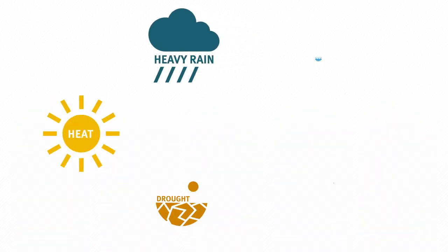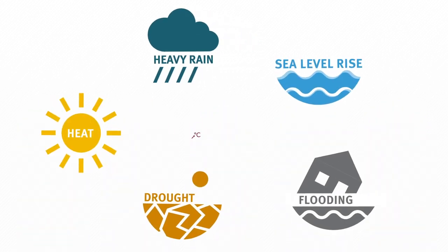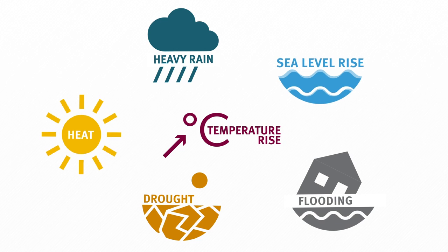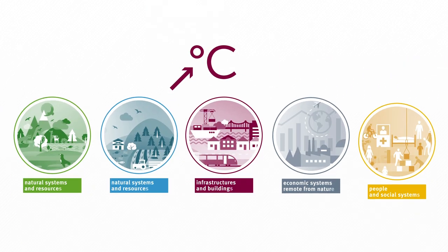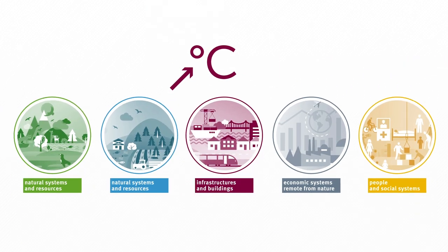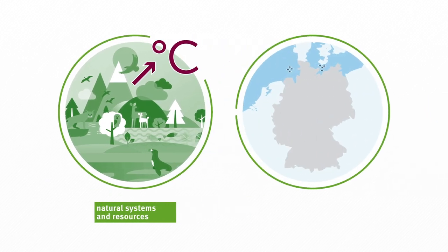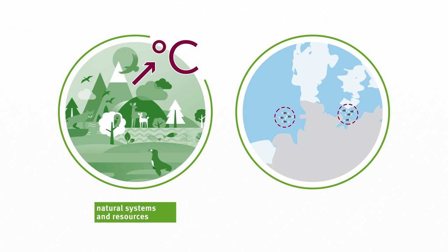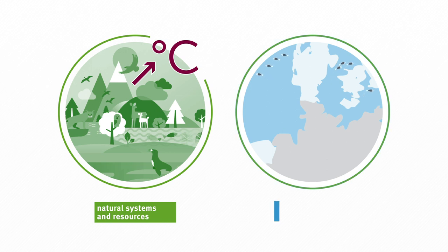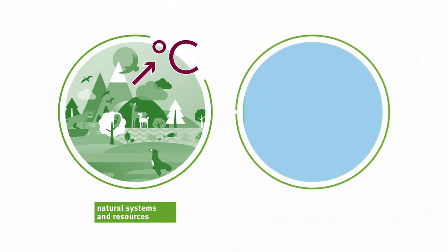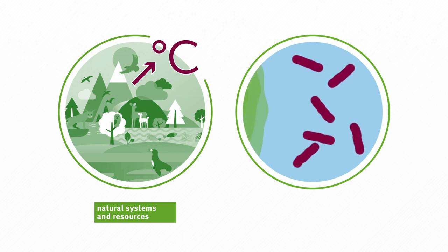Behind all these changes lies one thing: global temperatures are rising, and the temperature rise is affecting all systems. Ecosystems are changing — species which thrive in cold temperatures migrate or become extinct. For example, cod are disappearing in the North Sea and herring in the Baltic Sea, with consequences for fisheries and tourism. In warmer waters, blue-green algae and harmful bacteria also multiply more easily.